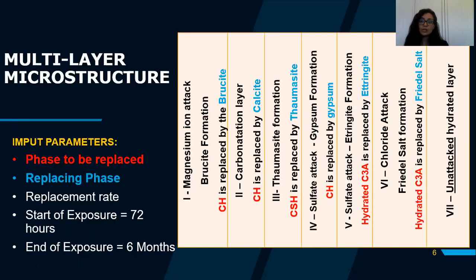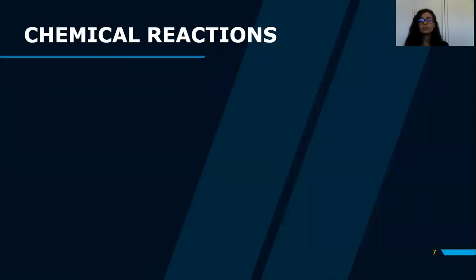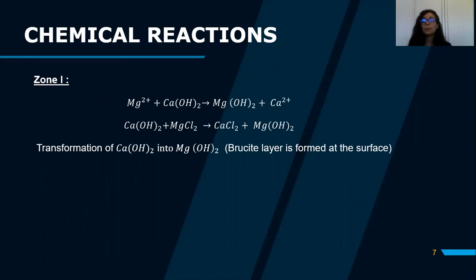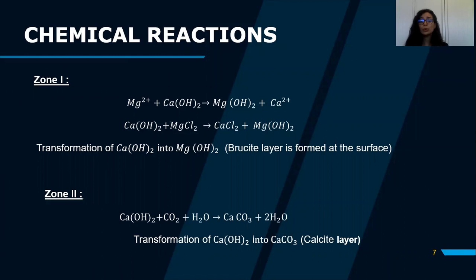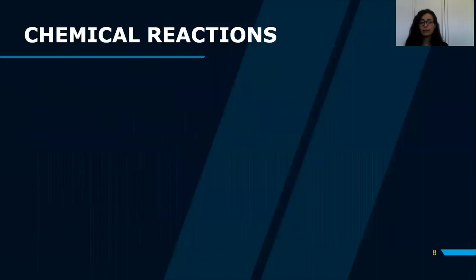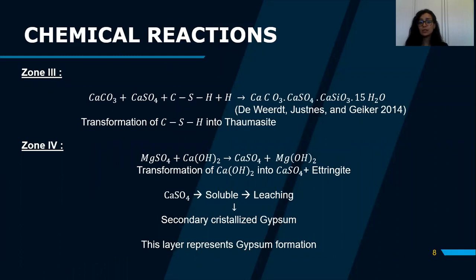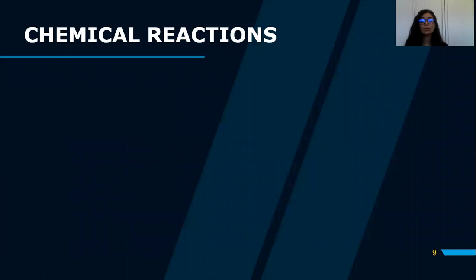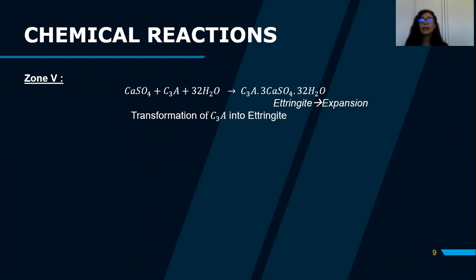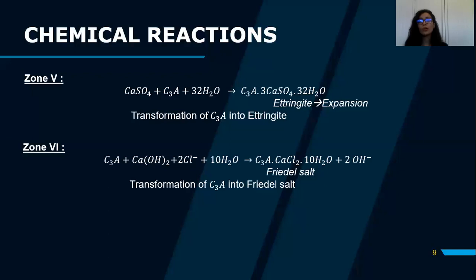The start of exposure is 72 hours and the end is six months. The chemical reactions are as follows: in layer one, reaction with magnesium ions leads to brucite formation. In zone two, portlandite reacts with CO2 to form the calcite layer. In zone three, seawater reacts with C-S-H to form thaumasite. In zone four, magnesium sulfate reacts with portlandite to form gypsum. In zone five, ettringite forms from the reaction between calcium sulfate and C3A. In zone six, Friedel's salt forms from the reaction with chloride ions. Beyond that is the unattacked hydrated cement.